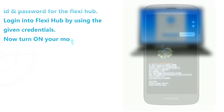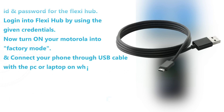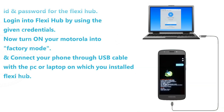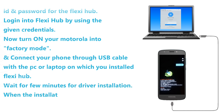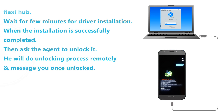Now turn on your Motorola in factory mode and connect your phone through USB cable with the PC or laptop on which you installed FlexiHub. Wait a few minutes for driver installation. When the installation is successfully completed, ask the agent to unlock it. He will do the unlocking process remotely and message you when it is unlocked.